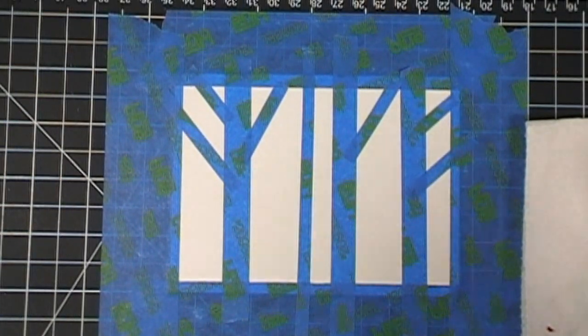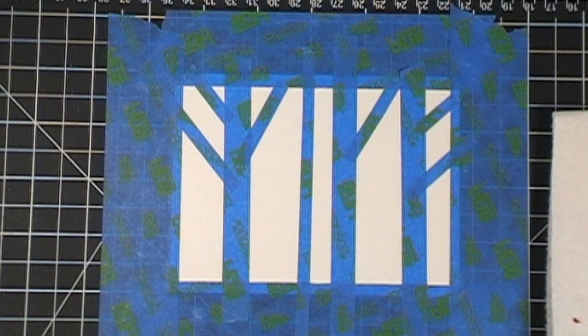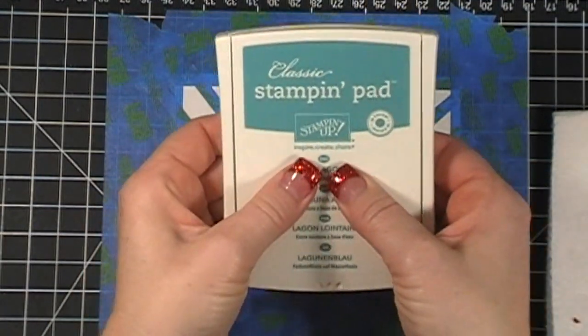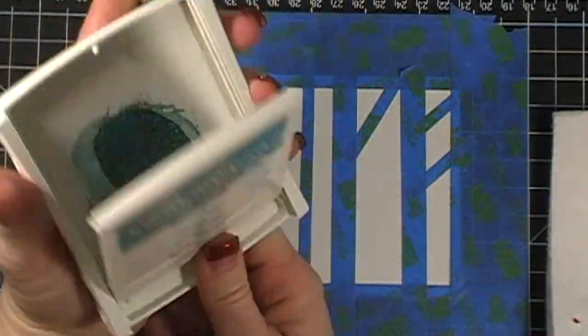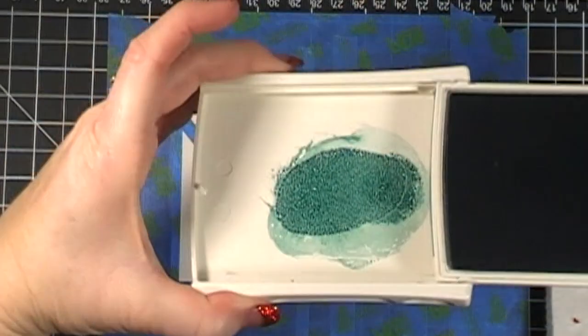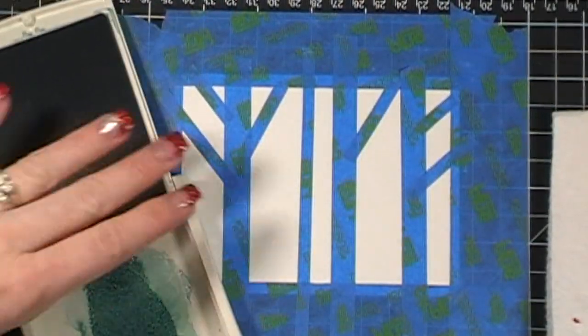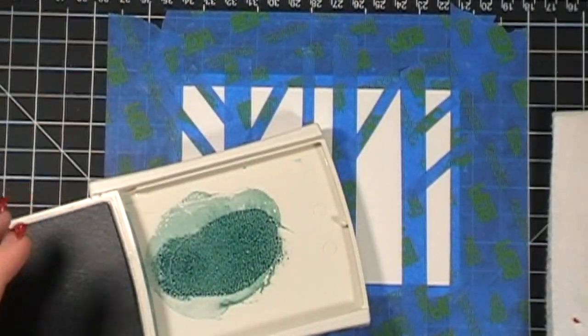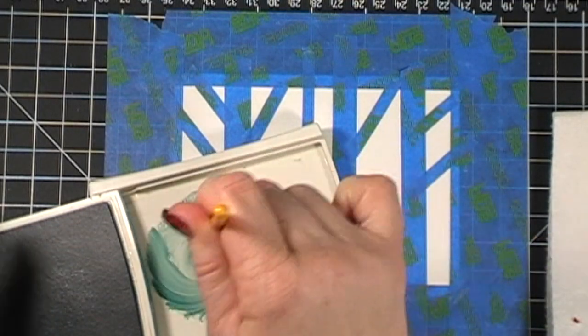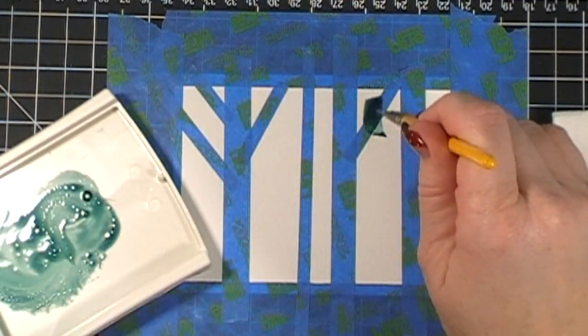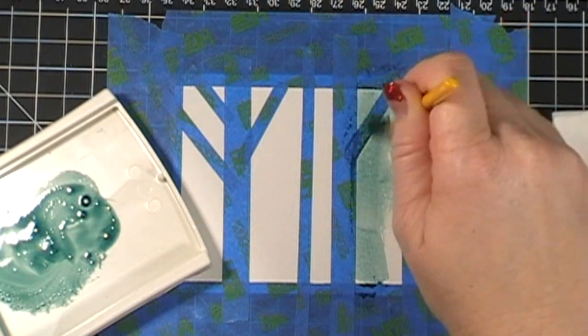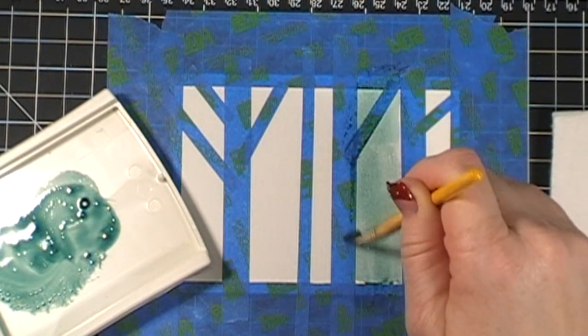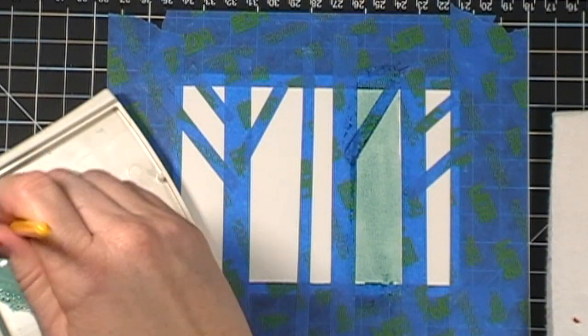We're going to use Lost Lagoon first. This is our first layer, so you're going to squeeze the middle really good, get it nice and wet, so you have all this ink in the palette here. And then we're going to get our brush full of water and just mix, make this really nice, beautiful watercolor wash. And then I'm just going to go in between all the tape with the Lost Lagoon ink.